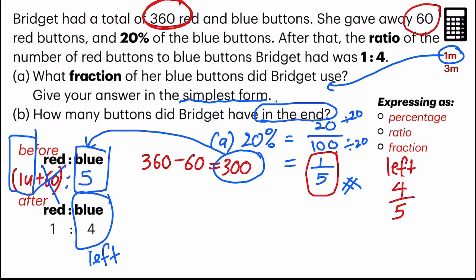So my next step is to find out 1 unit. By taking 300 divided by 6, I get 50.